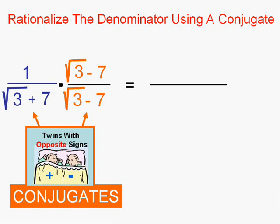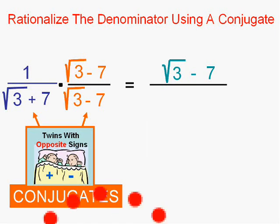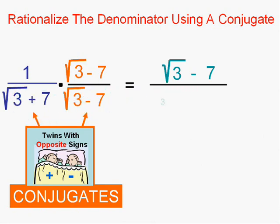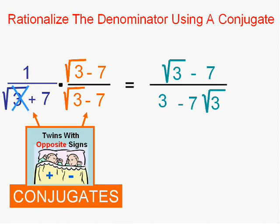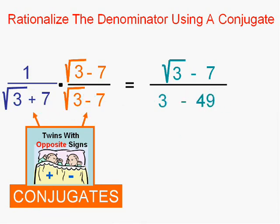Look what happened. In the top, we did get a radical — but you're allowed to have a radical in the top. In the bottom, watch what happens when we do FOIL: the radical becomes a perfect square every time. And the minus, along with the plus from the conjugate, cancel each other out. We always ended up with at least a number — not a radical — in the denominator. That was the conjugate trick for rationalizing a denominator.